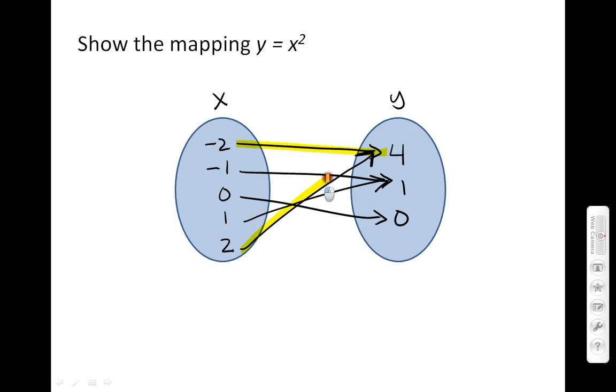Because if you look at negative 2 and positive 2, they both mapped to the range value 4. Also, negative 1 and positive 1 mapped to the same value positive 1. So this is not what we call one-to-one.